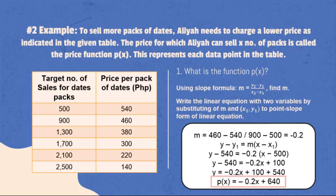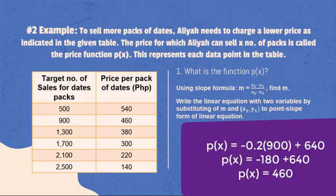To check if our function is correct, let us substitute 900 as the value of x. -0.2 times 900 is equal to -180. -180 plus 640 is equal to 460, which is equal to the corresponding value of 900 on the given table.